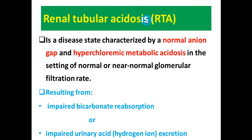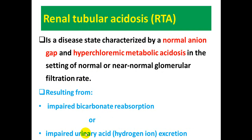Renal tubular acidosis, RTA, is a disease state characterized by normal anion gap, hyperchloremic metabolic acidosis, in the setting of normal or near-normal glomerular filtration. It can result from impaired bicarbonate reabsorption or impaired urinary acid excretion.